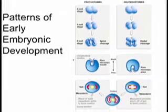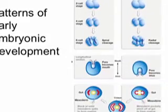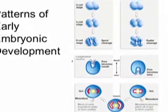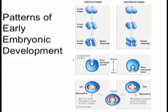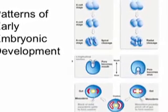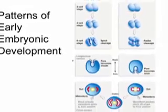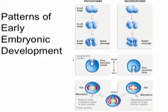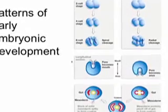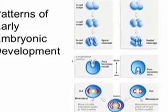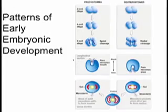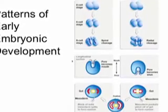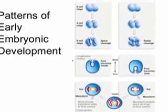In protostomes the pore becomes the mouth first, whereas in deuterostomes the pore becomes the anus first. The coelom forms in protostomes by simple blocks of mesoderm splitting into coeloms. And in deuterostomes, mesoderm pockets form — the endoderm folds become the coelom. Animals.